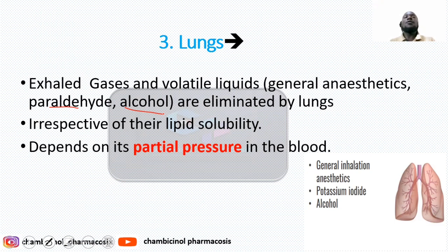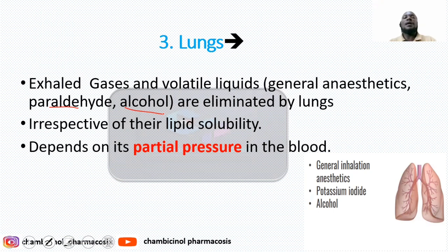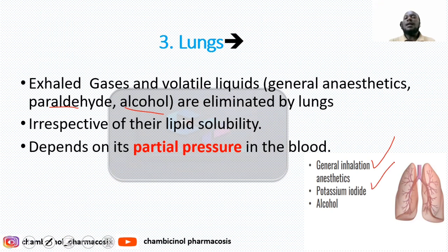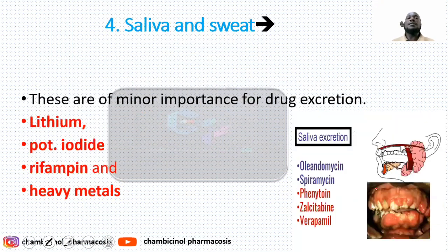It normally depends on the solubility of the drug in the blood. Nitrous oxide, a general anesthetic, has very low solubility in the blood, so it is easily excreted via exhaled air. In comparison, alcohol has very high solubility in the blood, making it somewhat difficult to eliminate via the lungs. Drugs excreted via the lungs include general anesthetics like potassium aldehyde, alcohol, nitrous oxide, and halothane.